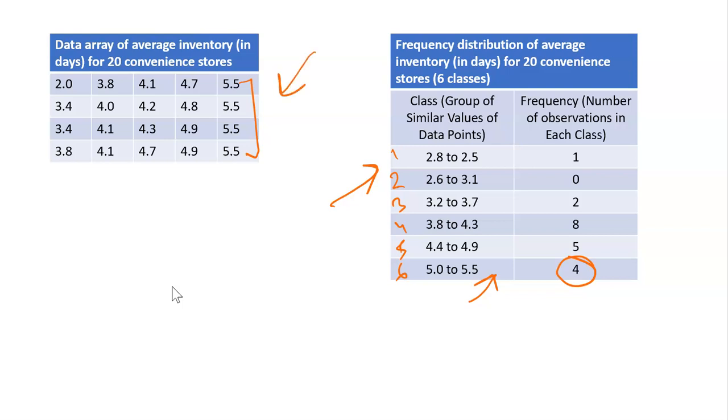If we see in the data array, we can see that average inventory falls most often in the range from 3.8 to 4.3—that is 8, which is the highest number. Also, inventories in the range of 4.4 to 4.9 and 5.0 to 5.5 are not as prevalent but occur more frequently than some others. The frequency numbers for these groups are less than the frequency numbers for these groups.